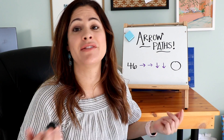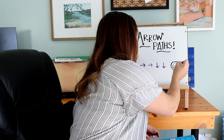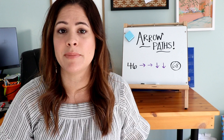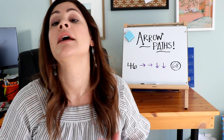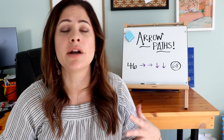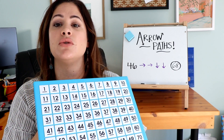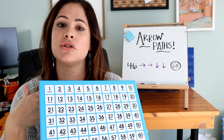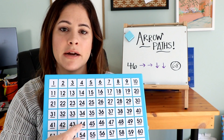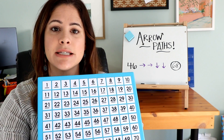Once students have found the answer is 68, they write it in the circle. I like to use this game as a warmup at the beginning of our math block. I usually write three or four of these on the board and students take turns. Even though only one student is writing the answer, everyone participates because everyone can find the number, follow the arrows, and get to the next one.